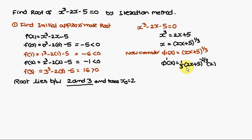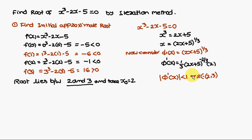Then phi'(x) = (1/3)(2x + 5)^(-2/3) · 2. We verify that |phi'(x)| < 1 for all x in [2, 3]. Note that if instead we had written 2x = x³ - 5 and derived a different phi(x), that condition would never be satisfied. We must always write the equation in a form where |phi'(x)| < 1 holds.